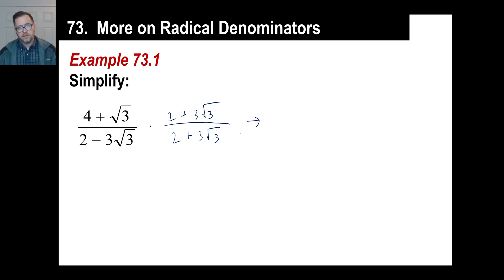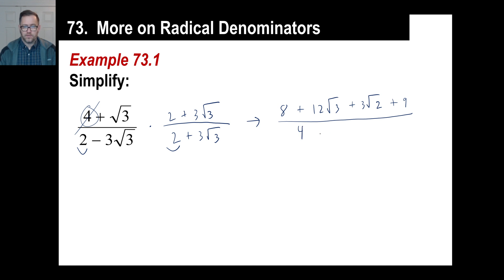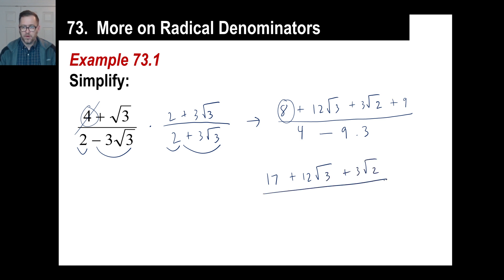We need to do the whole numerator across. Four times two is eight. Four times three square root of three is 12 square root of three. Then three square root of two is there. And square root of three times three times square root of three is the same as three times three, which is nine. For the bottom, just these two: that gives us four. Then the last two — that's nine times three. Combining the top: eight plus nine is 17, we have 12 square root of three, and we have three square root of two. The bottom: four minus nine times three is four minus 27, which is negative 23.